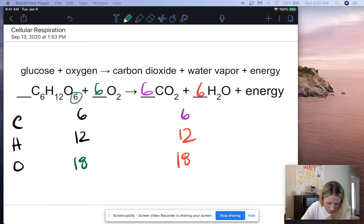And then last but not least, I have six plus 12, which is 18 oxygens on my reactant side. And I have 12 plus six oxygens on my product side. And we are good and balanced there.